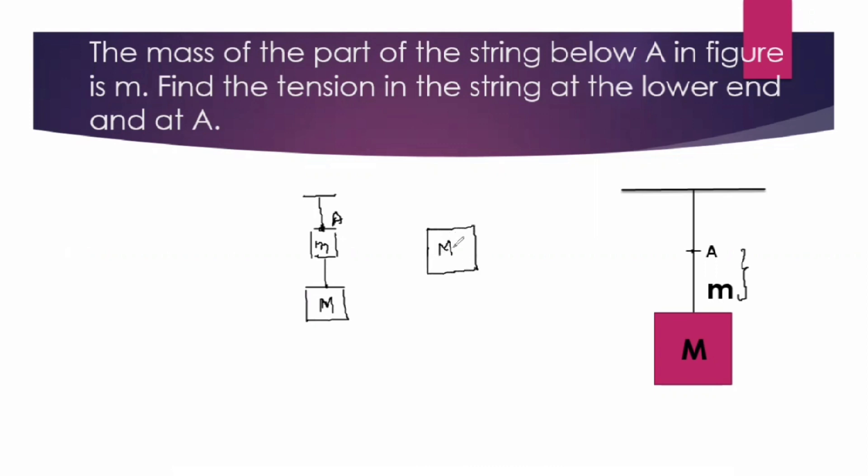Let us draw the free body diagram for this imaginary block. Downward force will be the gravitational force which is equal to mass of the blocks into g, and it is held stationary by reaction force due to the string, and we call it tension. So tension at A, let us call it T_A.